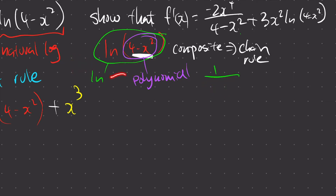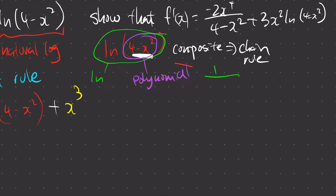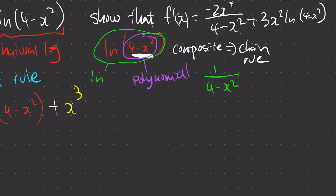Instead of writing just x, I need to write down whatever is in the next layer. So I copy down (4 minus x squared). Then since we're using chain rule, we multiply by the derivative of the second layer. The derivative of the second layer is simply negative 2x — because the derivative of 4 is zero, and negative x squared becomes negative 2x.